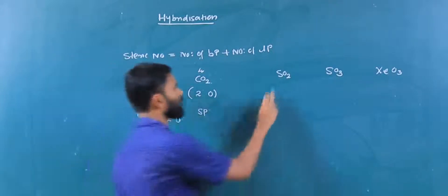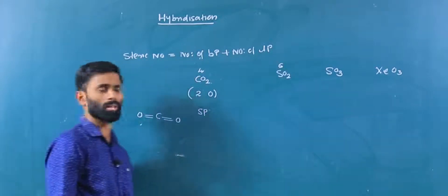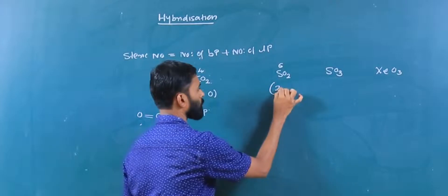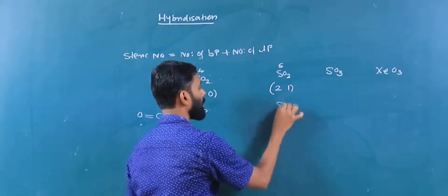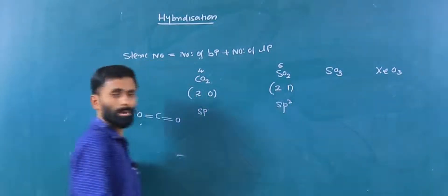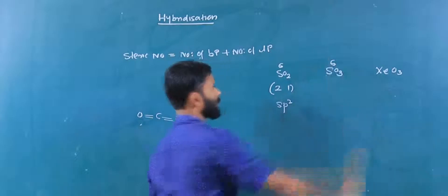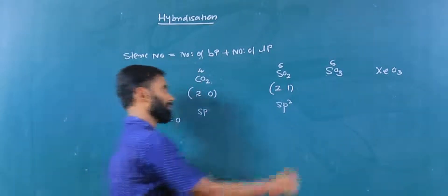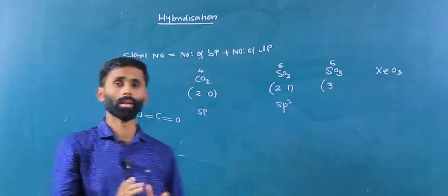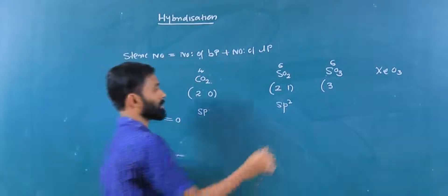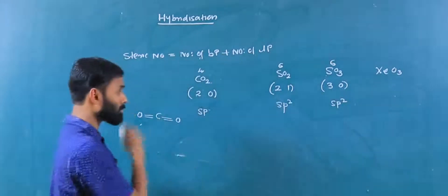Next, sulfur dioxide. Sulfur has 6 valence electrons. Bond form: 3 bond form jayno with oxygen, including one double bond. Subtracting: 6 minus 6 equals zero. Hybridization is SP2. This molecule is a very important molecule.